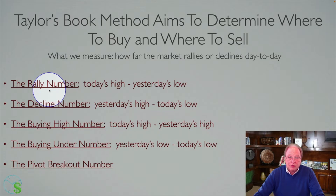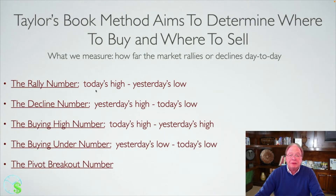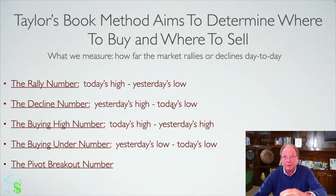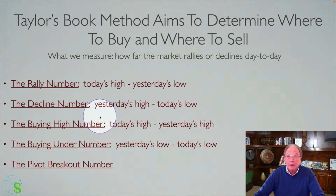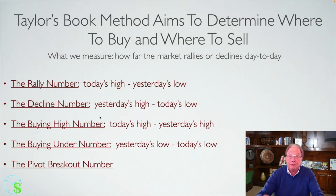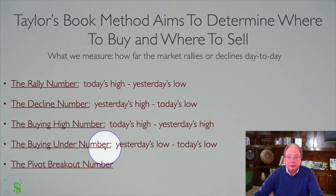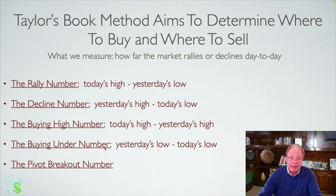First, there's what's called the rally number, which is the difference between today's high and yesterday's low — how far the market goes up from one day to the next. Then the decline number, which is the difference of yesterday's high minus today's low — how far the market declines from day to day. The buying high number is the difference between today's high and yesterday's high, how far the market rallies above the previous day. And the buying under number is yesterday's low minus today's low, how far the market declined today from the previous day.